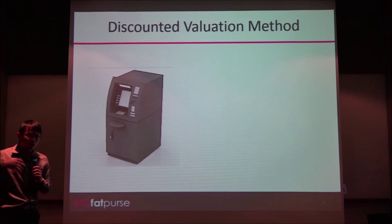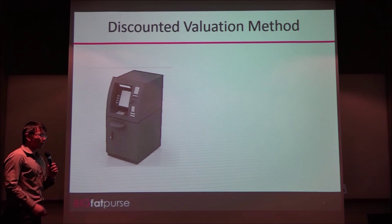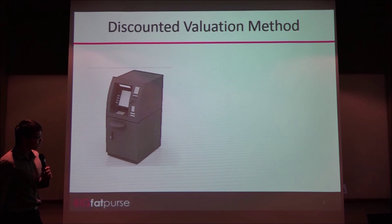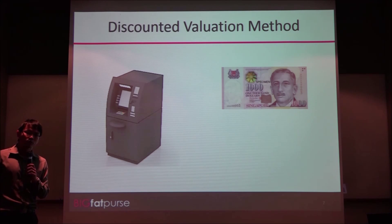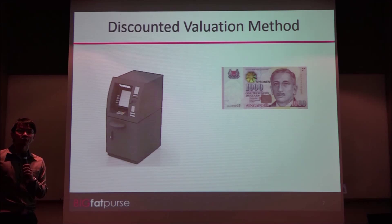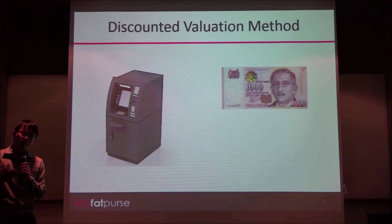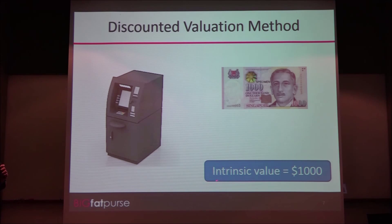The concept is like this. Let's say you want to buy a cash machine. How do you know what is the value of this cash machine? Let's say this cash machine can give you $1,000 — that's it. How much would you be willing to pay to buy this cash machine? Since it can only give you $1,000, you'd pay less than $1,000. So the intrinsic value of this cash machine is $1,000.